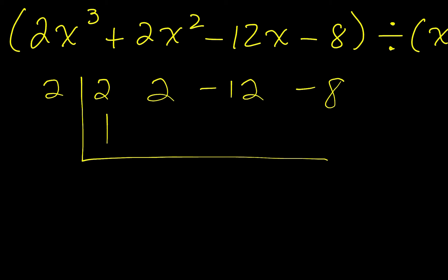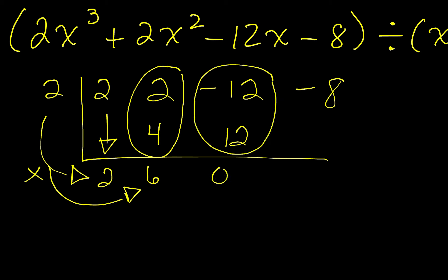Now we need to bring down this first number. We are going to multiply on the outside. 2 times 2 is 4, and then we are going to combine on the inside. 4 plus 2 is 6. Repeat that process. Let's multiply on the outside. 2 times 6 is 12. Combine on the inside. Negative 12 plus 12 is 0.